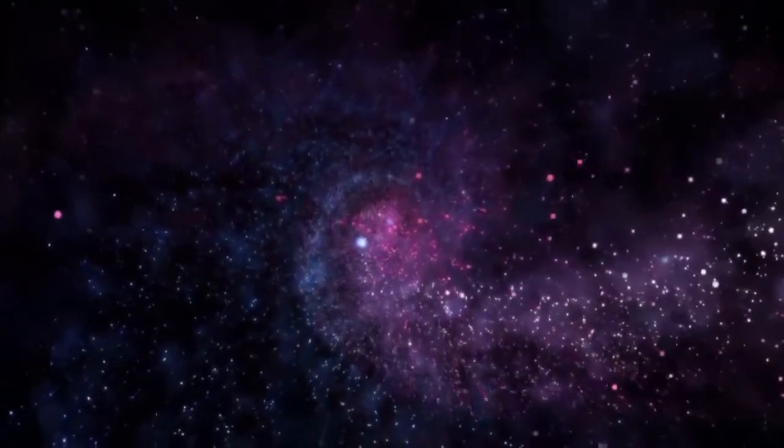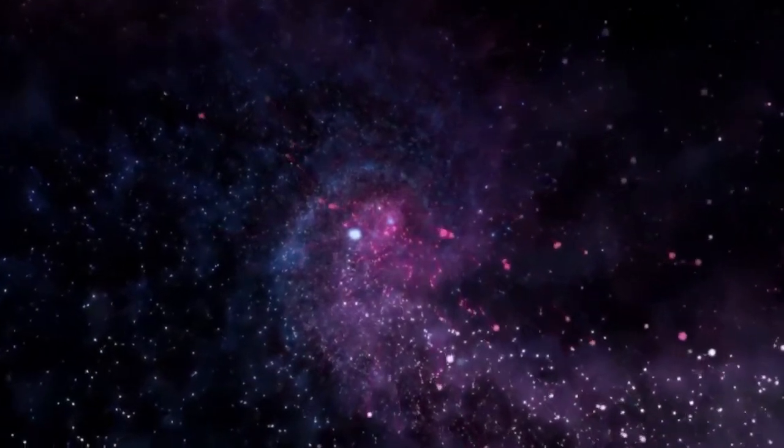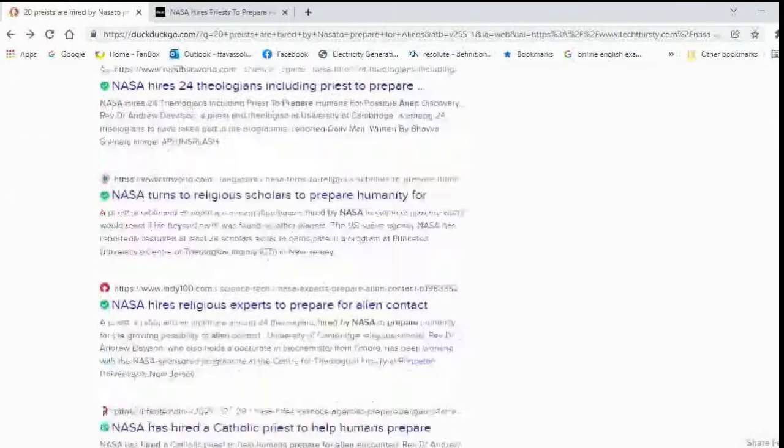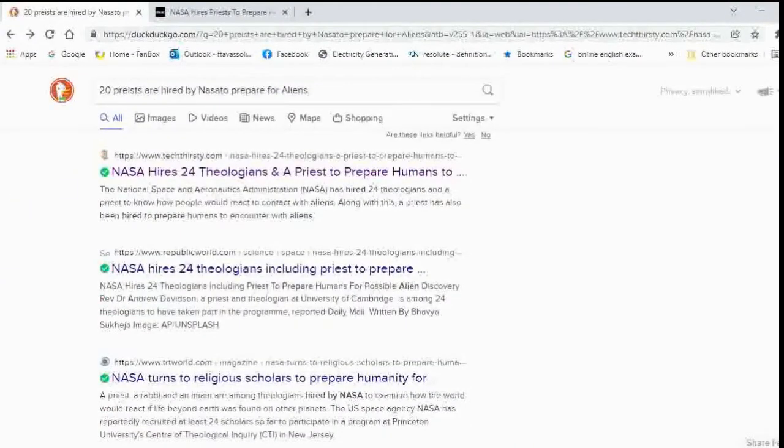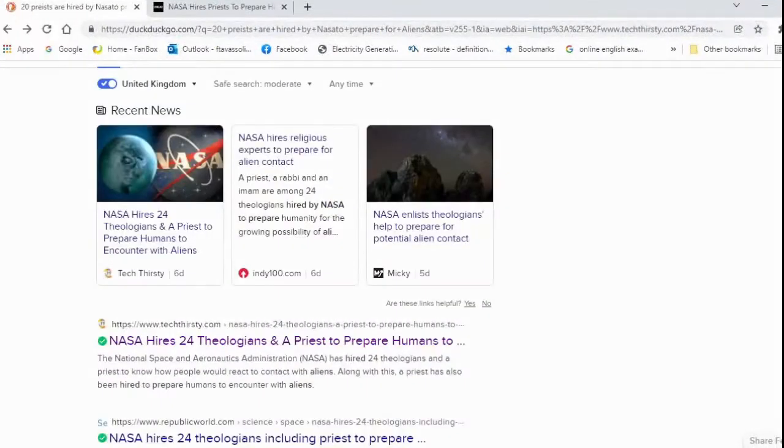Now with all that said, recently it's been on the news. You can Google it, you can search it on the internet, it'll just come up. As you can see it's all over the internet if you type, you know, NASA hires 24 theologians and a priest to prepare humans for aliens. You understand what they're trying to do? To prepare humans to encounter with aliens. Now they want to know what kind of reactions you would have as Christians of different denominations if you actually see them.